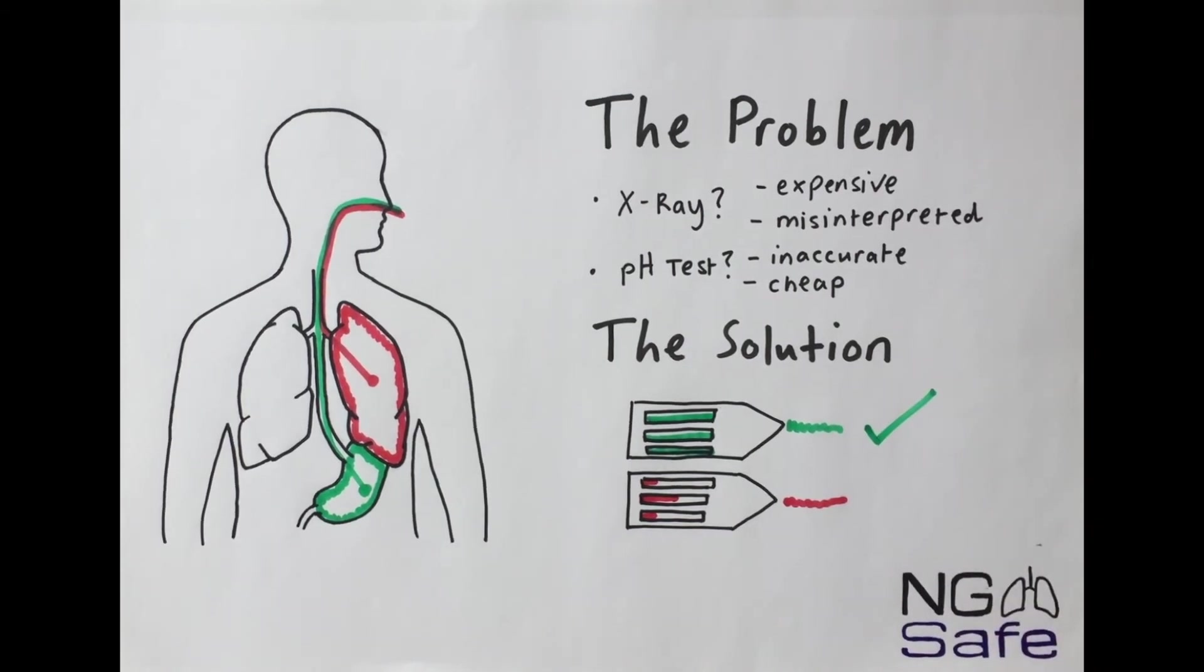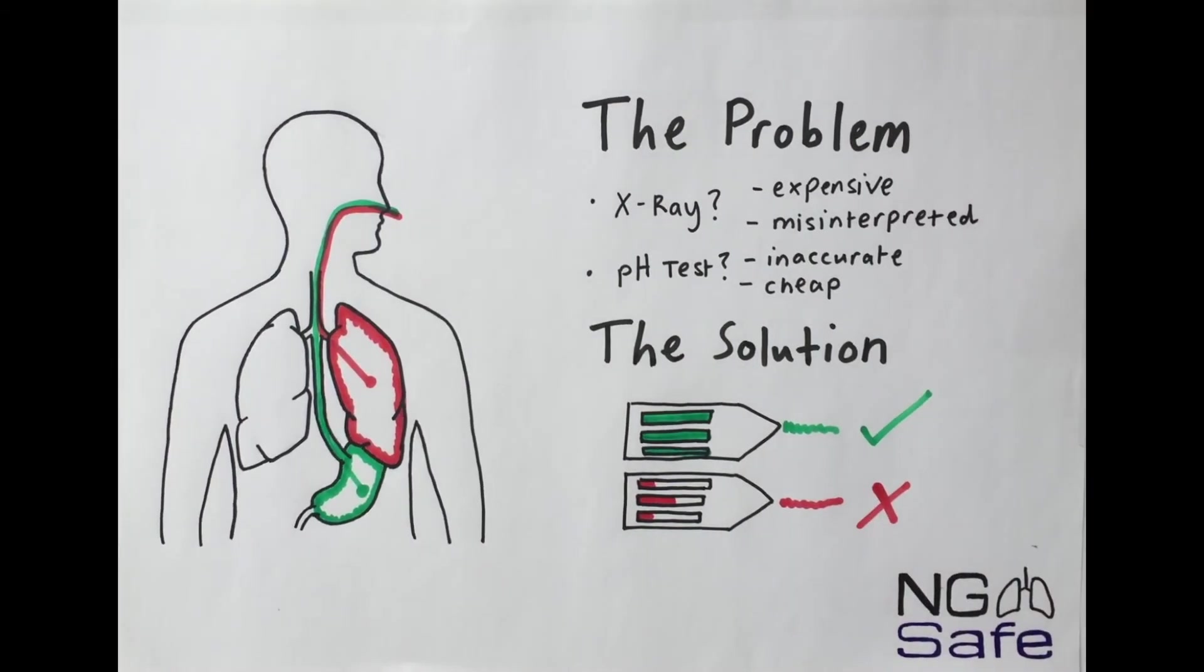This not only tells you where the nasogastric feeding tube is likely to be, but it also tells you how confident we are with this prediction.